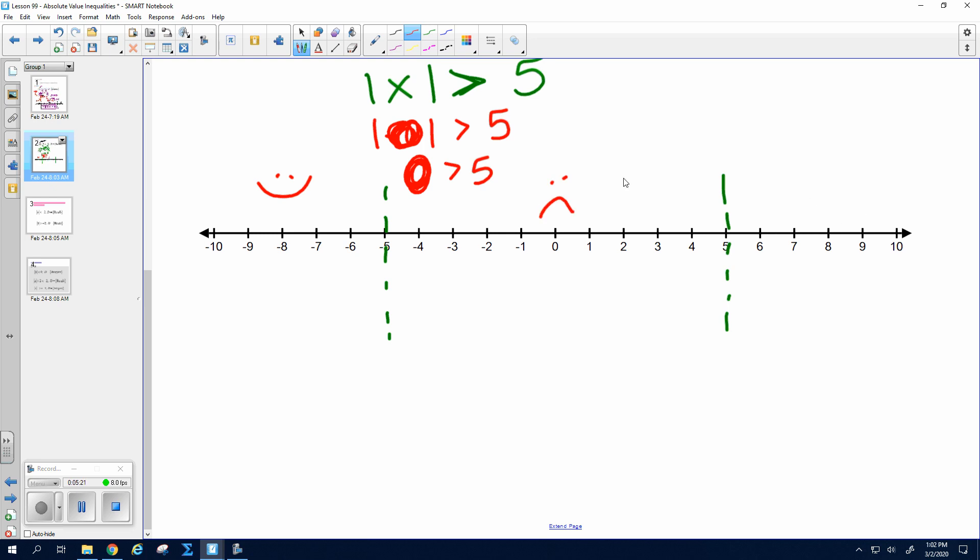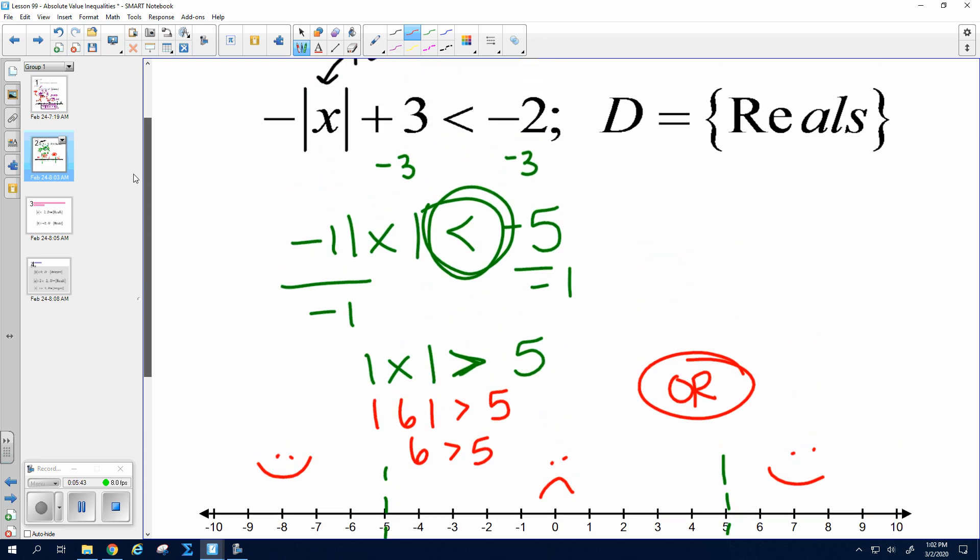And let's try positive 6. If you plug in positive 6, what is the absolute value of positive 6? Is 6 greater than 5? Yes. It should always work this way, where if you got this portion, you better get this portion too. All right? Because that would be an or graph. Right? All right. So my domain on this one is reals.